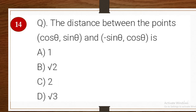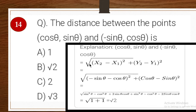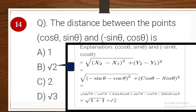Next one: the distance between points (cos θ, sin θ) and (−sin θ, cos θ). Options: A: 1, B: √2, C: 2, D: √3. Using the distance formula: √[(−sin θ − cos θ)² + (cos θ − sin θ)²]. Expanding gives sin²θ + cos²θ = 1 for each part; the cross terms cancel, giving √(1 + 1) = √2. B is the right answer.